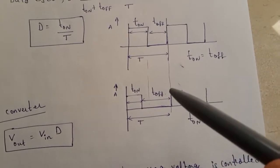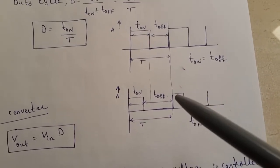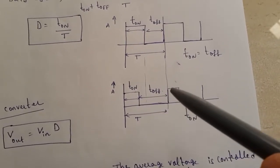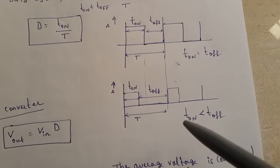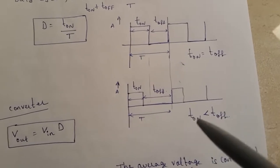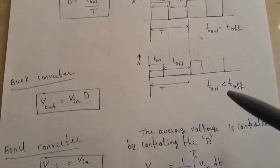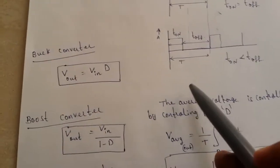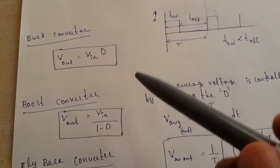Suppose you want to increase the output voltage — the T_on duration should be increased. In that case T_on should be greater than T_off. This applies in many converters.